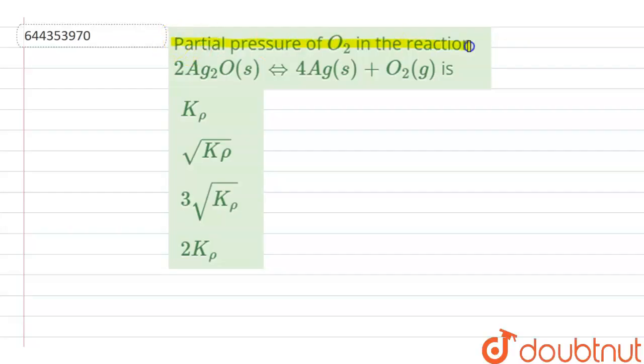The question given here is: partial pressure of O2 in the reaction 2Ag2O gives 4Ag plus O2 is. Options are Kp, root Kp, cube root Kp, and 2Kp.